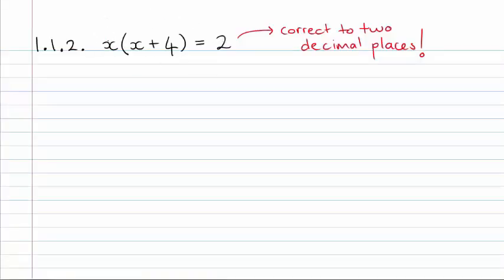Okay, so here's our equation. We have x multiplying into a bracket that has x inside of it, and it's all equal to 2 on that side.